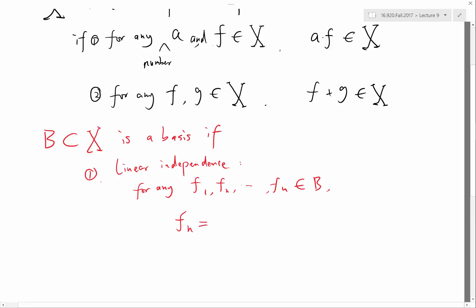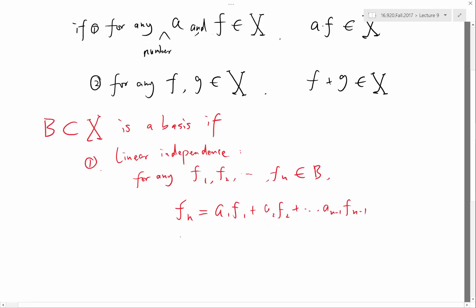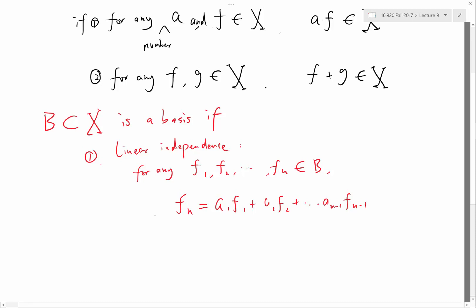You cannot express Fn. You cannot express any of these functions in the basis as a1 F1 plus a2 F2 plus et cetera a n-1 f n-1. This is true if and only if, well, this cannot be true forever. There cannot be a set of a1 to a n-1 such that this is true.